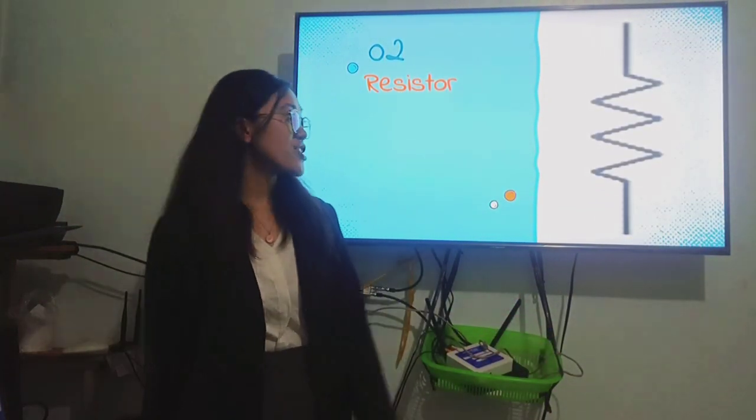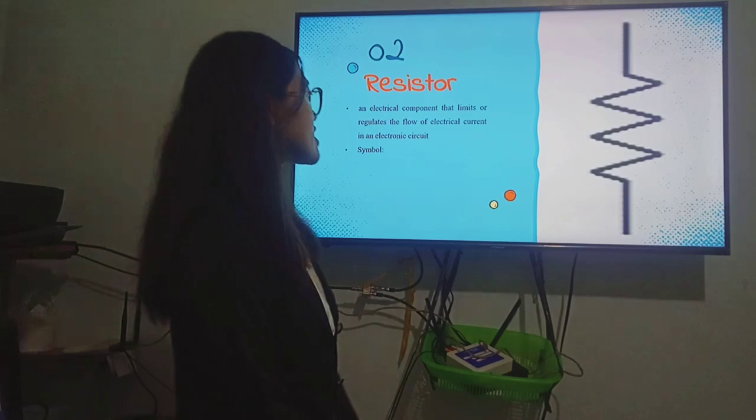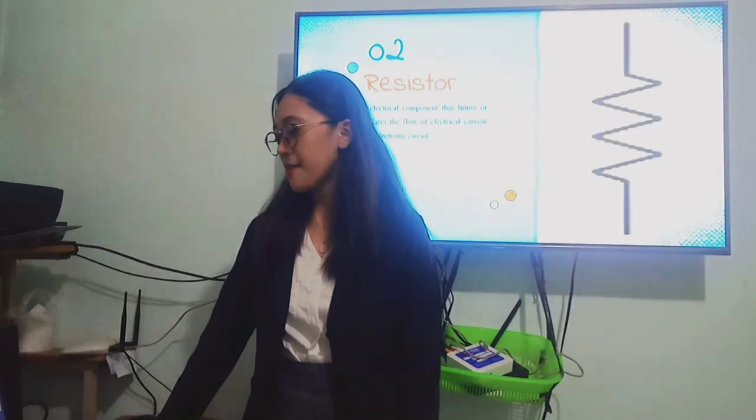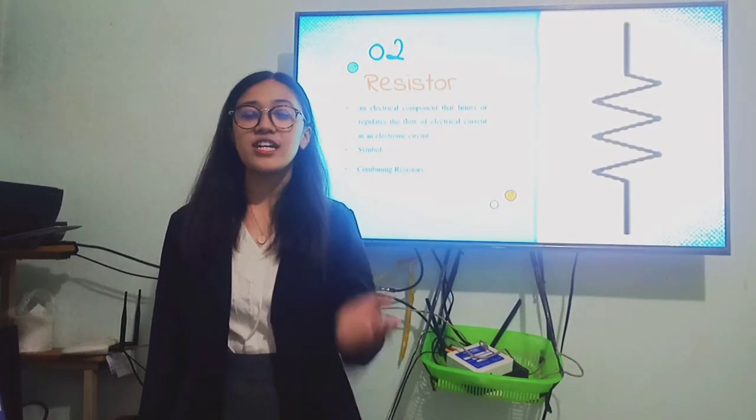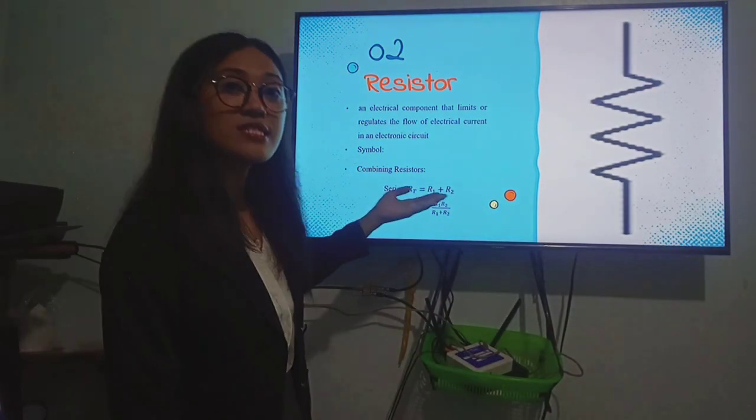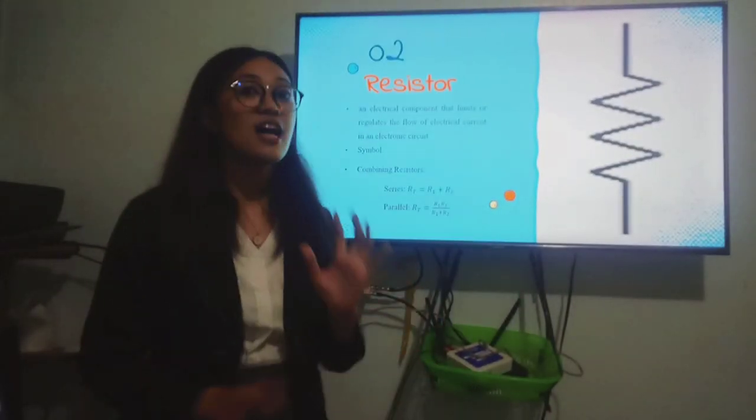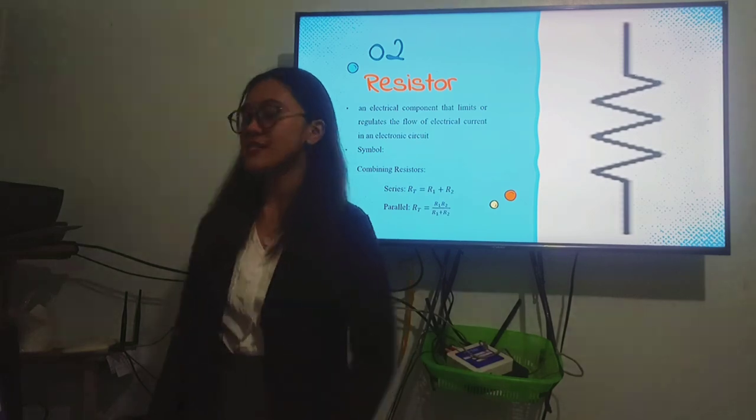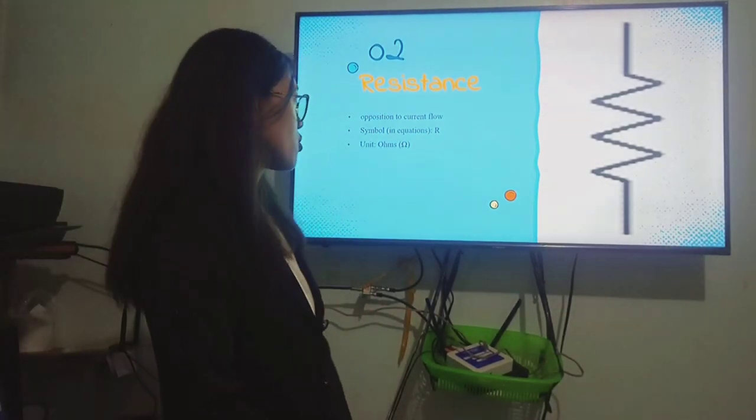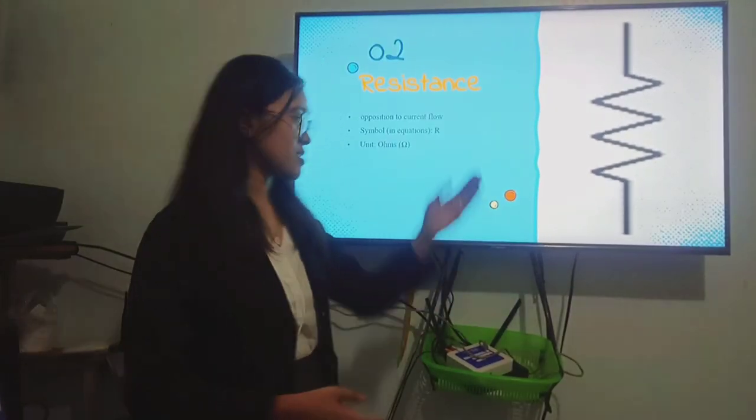Next element is called the resistor. The resistor is an electrical component that limits or regulates the flow of electrical current in an electronic circuit. And this is the symbol of a resistor. It looks like a zigzag. Now, in analyzing circuits, we combine resistors. Resistors can be in series or parallel. We have a formula for that. For series resistors, we simply add. And for parallel resistors, we divide the product of these resistances by its sum. Remember that. We will have examples of this on the later part. Next, resistors have resistance, which is the opposition to current flow. The symbol of resistance in equation is a capital letter R. And the unit of resistance is ohms.